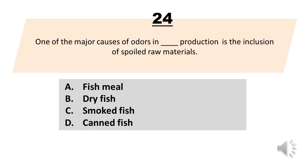One of the major causes of odors in blank production is the inclusion of spoiled raw materials. A. Fish meal. B. Dry fish. C. Smoked fish. D. Canned fish. The correct answer is Letter A, Fish meal.